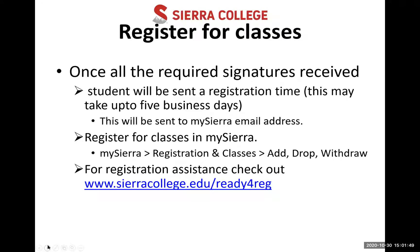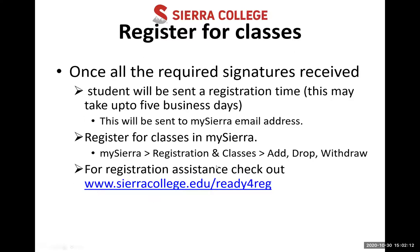Once all required signatures are received, the counselor sends it in. As a student, you'll be sent a registration time — this may take up to five business days — and it will be sent to your My Sierra email address. Then you'll get to register for classes. You'll use My Sierra, going through the Registration and Classes — Add, Drop, Withdraw section. If you need registration assistance, there's a website with lots of videos about adding onto wait lists and registering for classes.